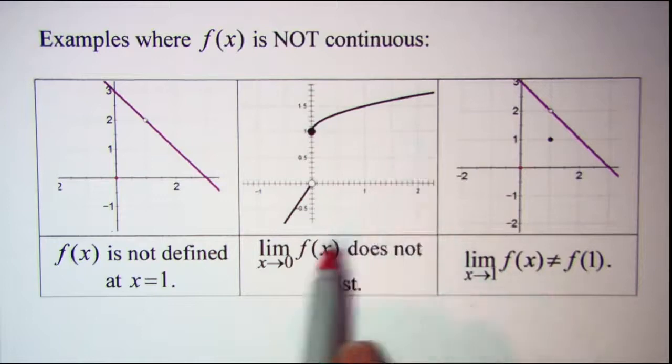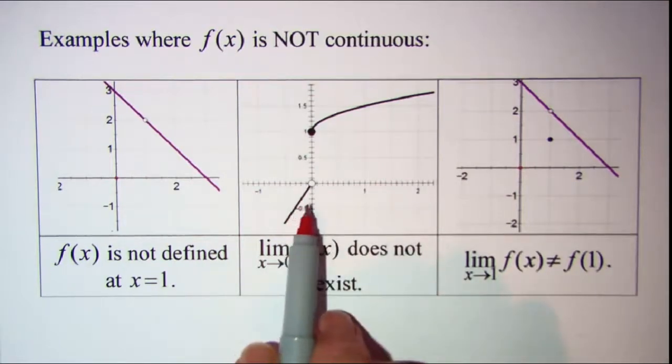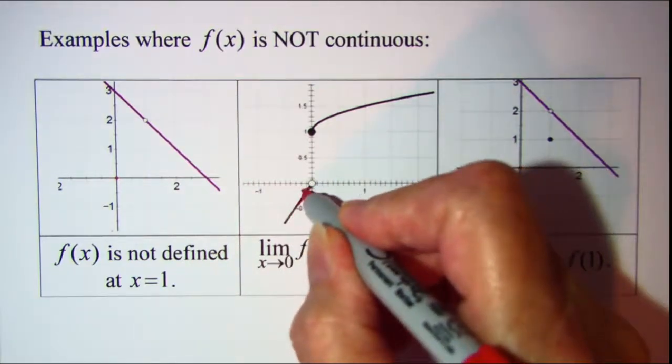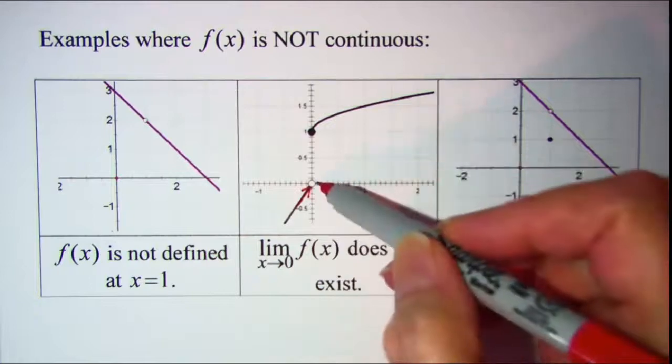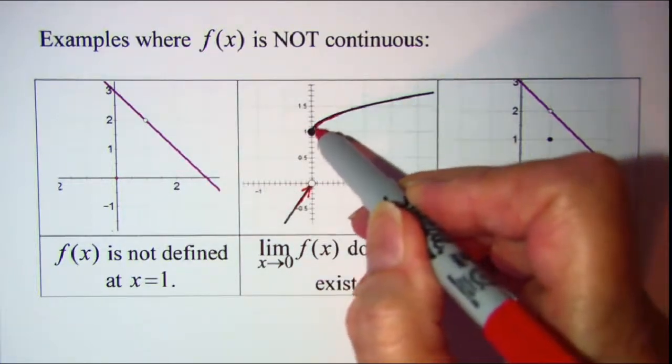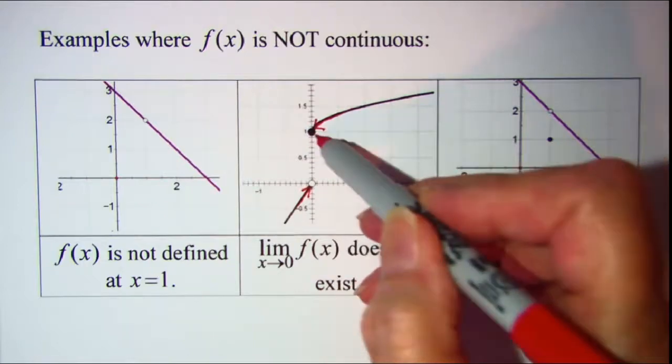In this example the limit of f of x does not exist when x approaches 0. Notice when we come in the function from the left the limit is 0 and when we come in on the function from the right the limit is 1.